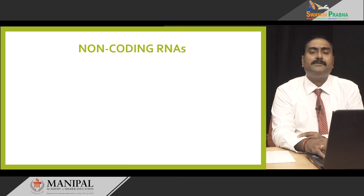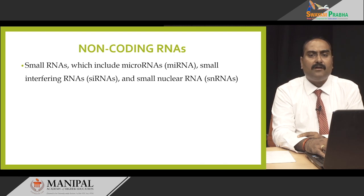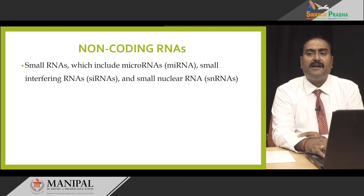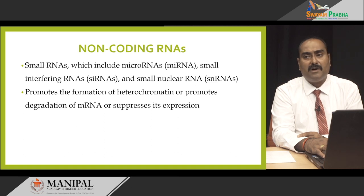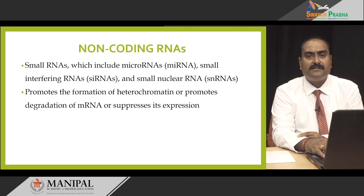Coming to the two other modes of epigenetic modifications known as non-coding RNAs and non-genic DNA. In non-coding RNA, we have small RNAs which include miRNA or microRNA, small interfering RNA (siRNA), and small nuclear RNA (snRNA). Whatever the type of RNA, the basic mechanism it employs is it promotes the formation of heterochromatin — making the DNA more compacted or tightly wound — or it promotes the degradation of mRNA or suppresses the expression of mRNA. That means either it makes the DNA less accessible, or, if the mRNA has already been synthesized by transcriptional activity, it stops the expression of that mRNA itself, thereby decreasing the expression of that particular gene.